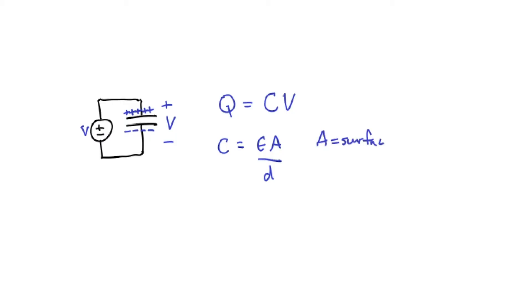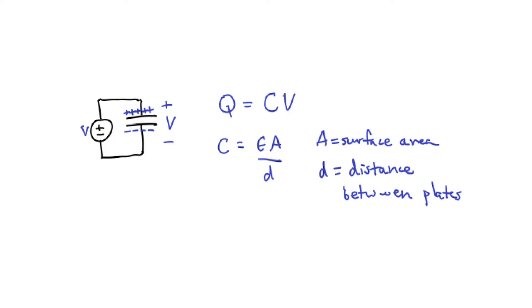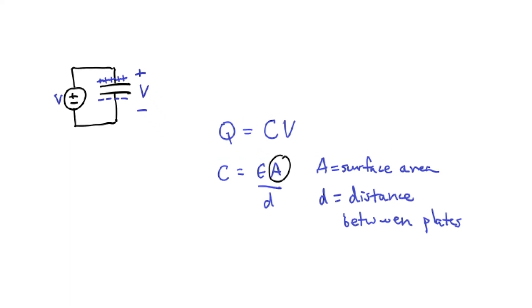So capacitance C is related to epsilon A over D, and A is the surface area of the plate, and D is the distance between the plates. Epsilon is the dielectric constant, so if you change the material between the plate, then it can cause the attraction of the charges to be either stronger or weaker, depending on what that material is. The reason I've drawn this is to point out that the capacitance is related to the surface area, because more surface area, more charge.